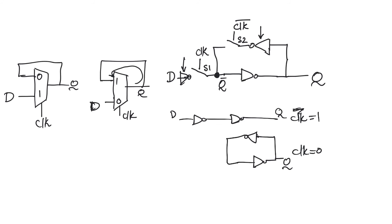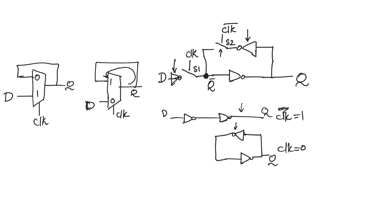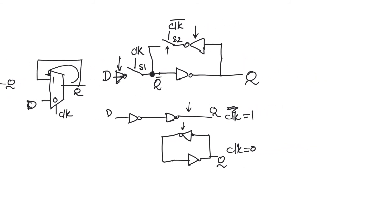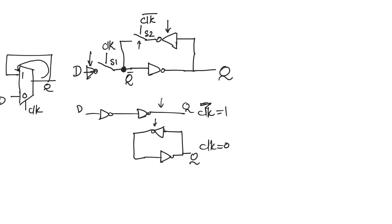Now we think about these switches — we represented them as ideal switches, meaning their on-resistance is equal to zero — but we know that switches are made of transistors. So the switches S1 and S2 could be made using NMOS or PMOS. When we have the option to use either, we will always use NMOS because of the superior mobility of electrons, which translates into a smaller on-resistance for the same size.